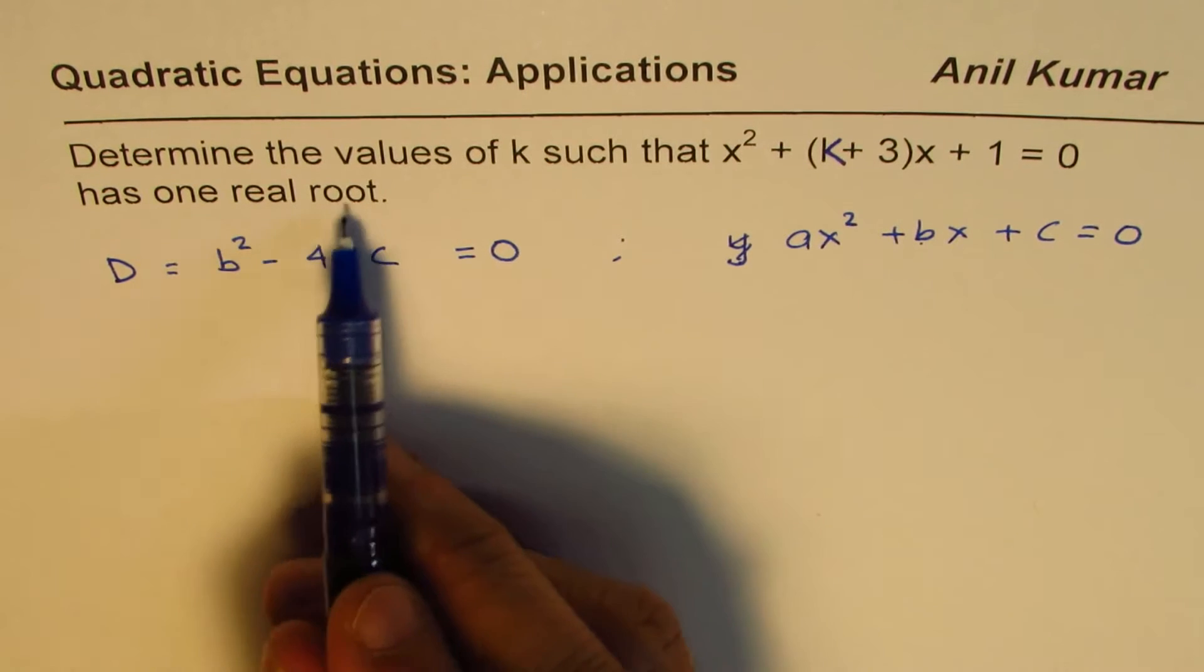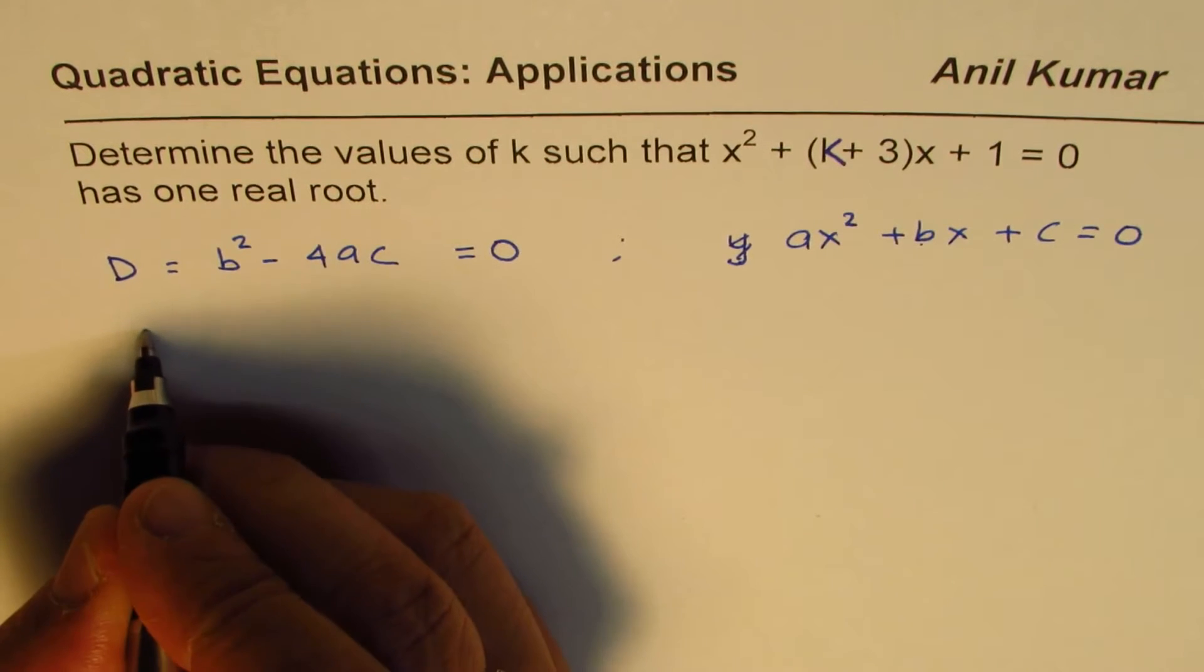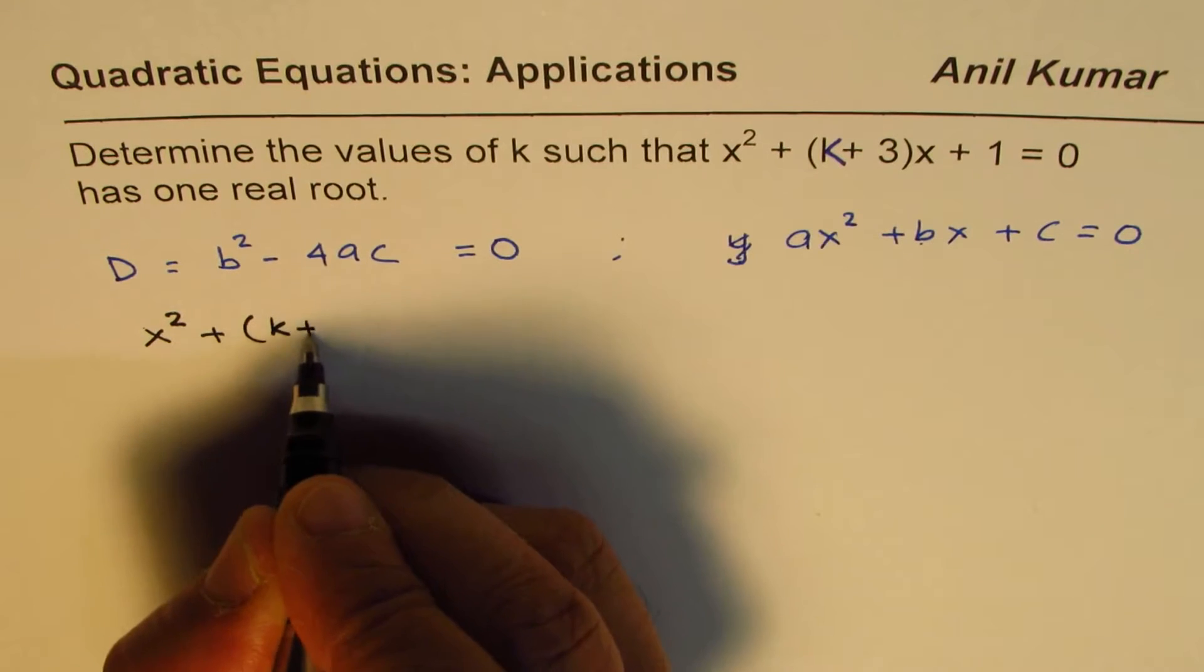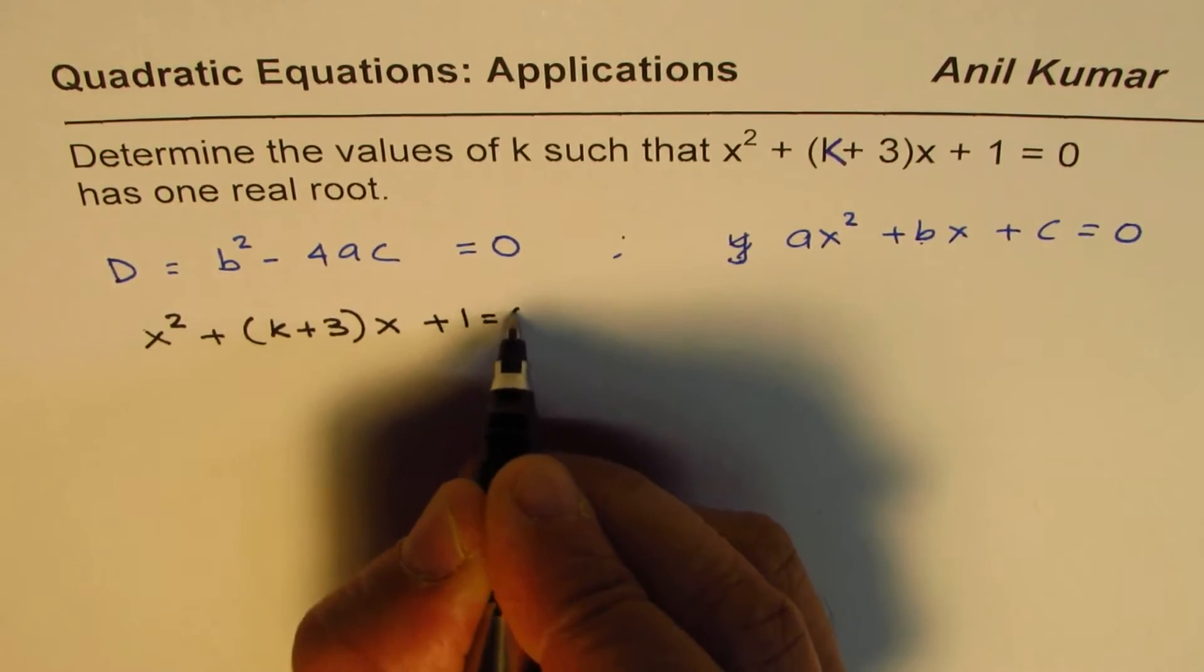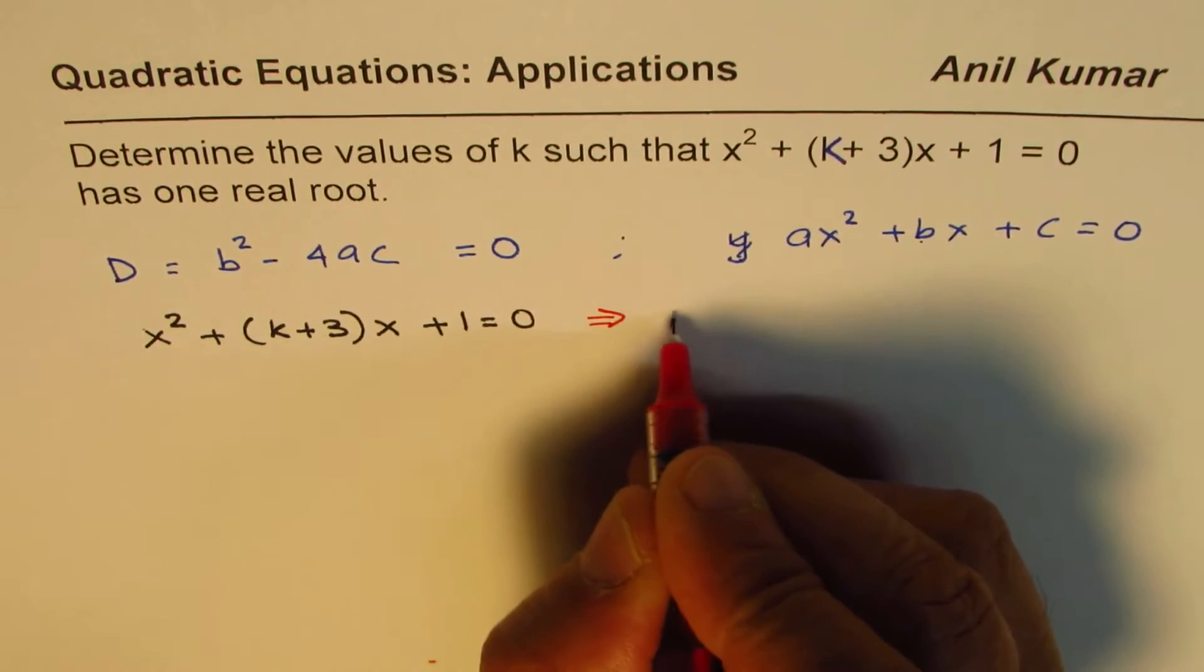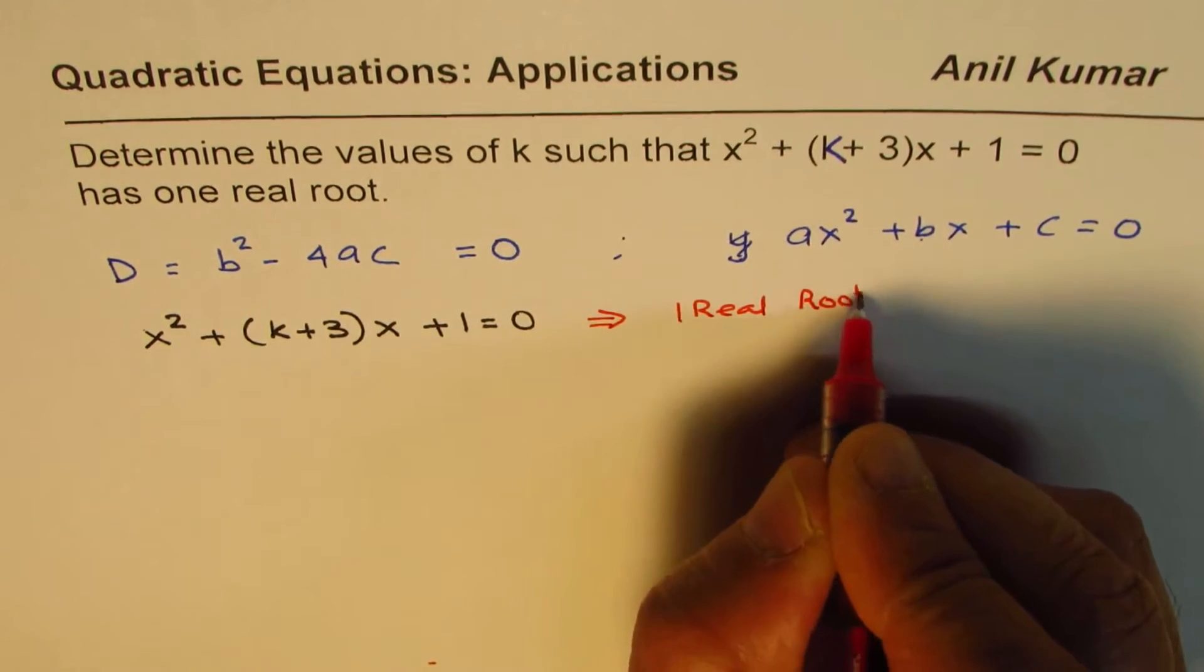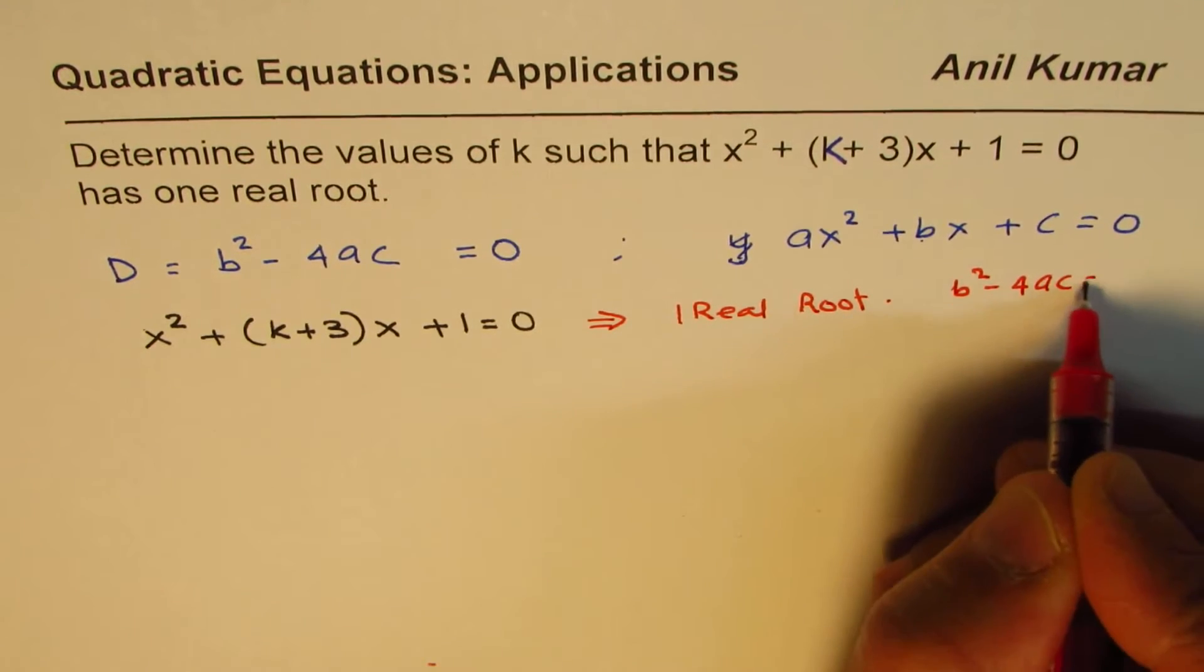So what we are given here is the equation x² + (k+3)x + 1 = 0. And if this has to have one real root, it means that b² - 4ac should be 0.